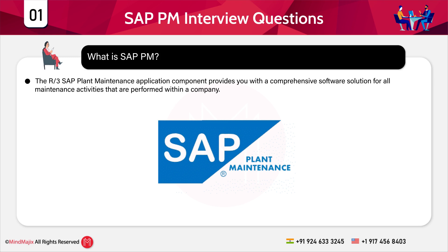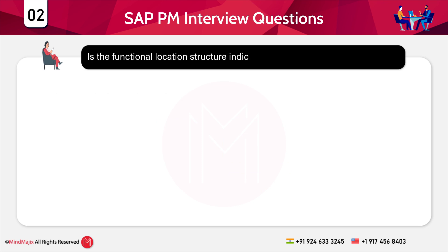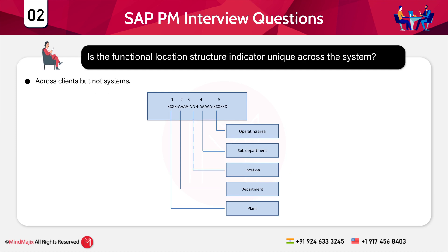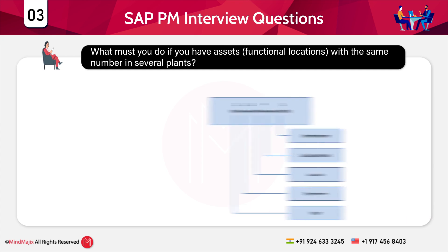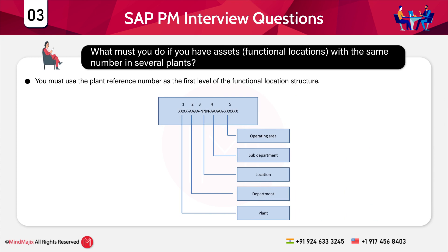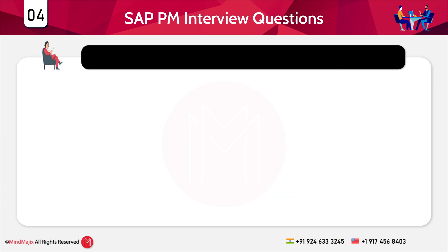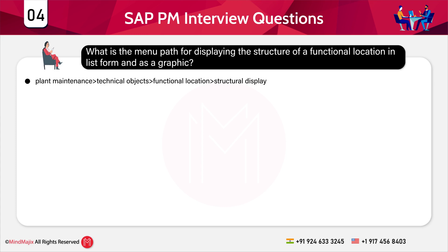The next question is: is the functional location structure indicator unique across the system? The answer is yes, it is unique across clients but not unique across systems. Next: what must you do if you have assets which are functional locations with the same number in several plants? You must use the plant reference number as the first level of the functional location structure. The menu path for displaying the structure of a functional location as a list or graphic is: Plant Maintenance > Technical Objects > Functional Location > Structural Display.